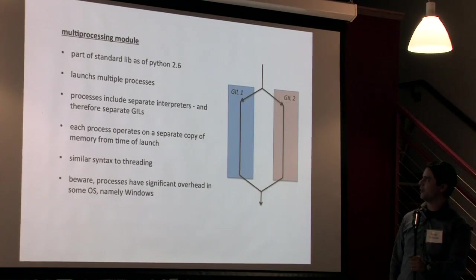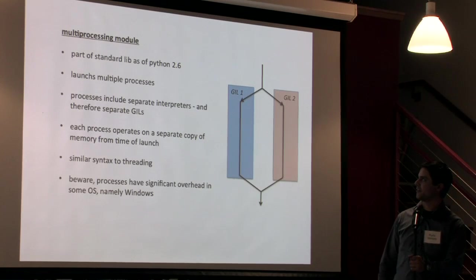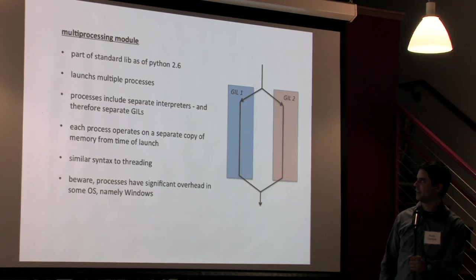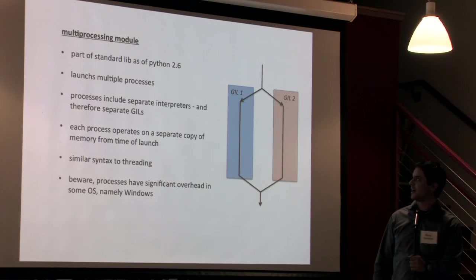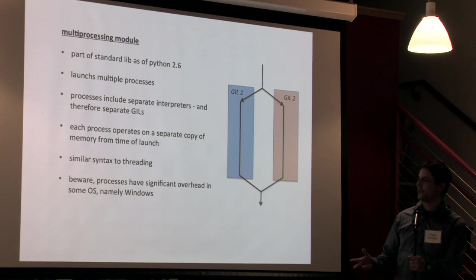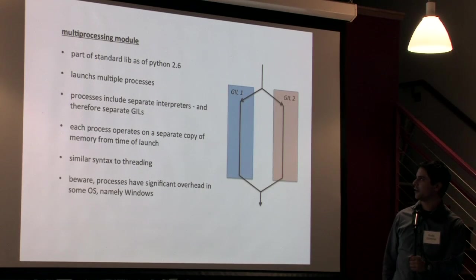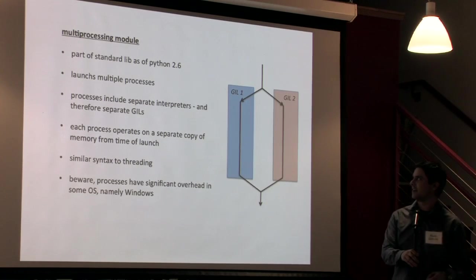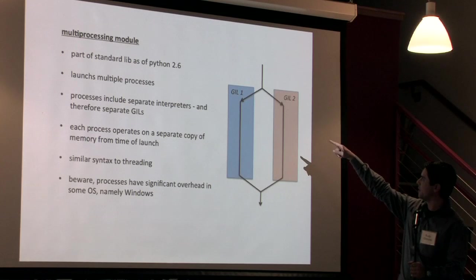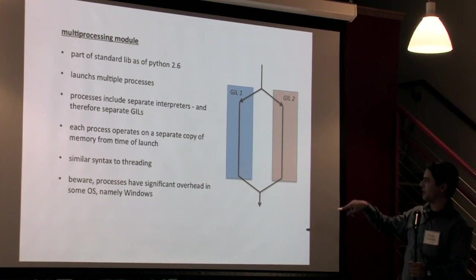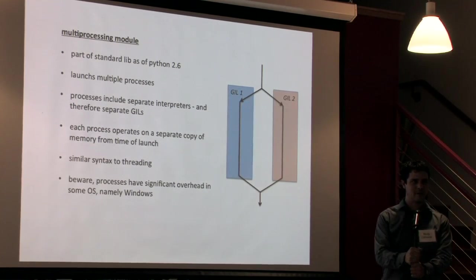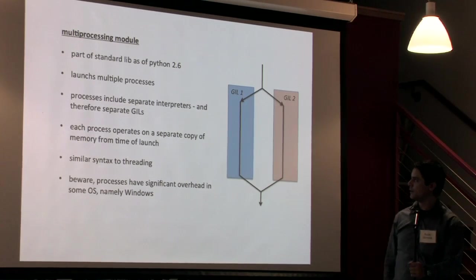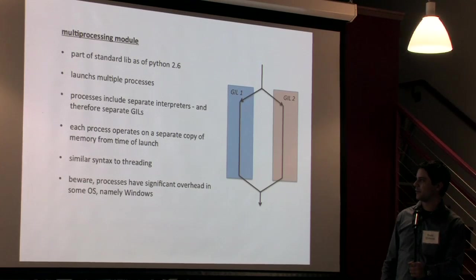So now let's look at the multi-processing module. This has been part of the standard library for Python since Python 2.6 and what this does is it allows you to launch multiple processes at one time. And because these processes will each include their own interpreter and therefore will have their own GIL, they basically sidestep this GIL limitation that you can only have one thread running at a time. So you can split your process into two parts, GIL one, GIL two, and those will both run independently and your operating system will automatically put them on different cores if those are available. Each of these processes will have a separate copy of whatever is in memory from the time of launch.